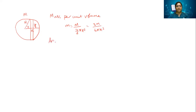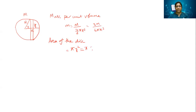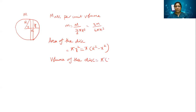Let me first write the area of this little disk. Area of the disk is equal to π r², where r here is y, so it's π y². From this diagram you can see y² = r² − x² from this triangle, so you can write π(r² − x²). That is the area. So we also need the volume, because we are talking about a three-dimensional object. Volume of the disk is equal to π(r² − x²) dx.